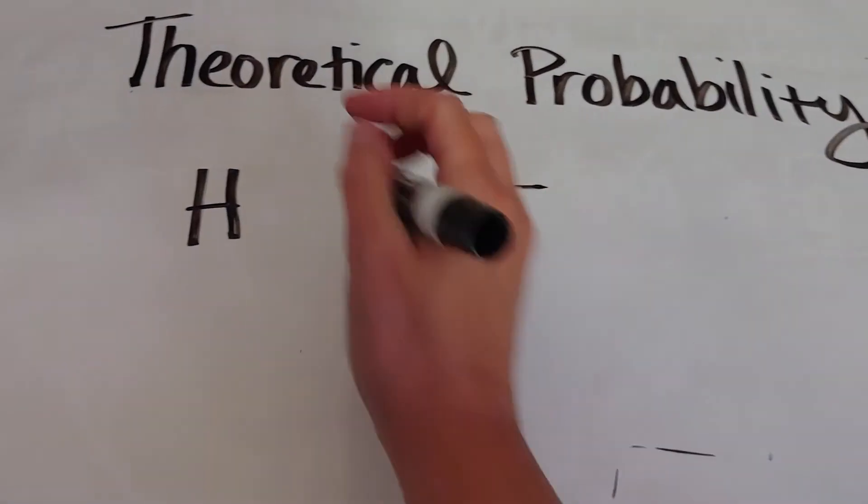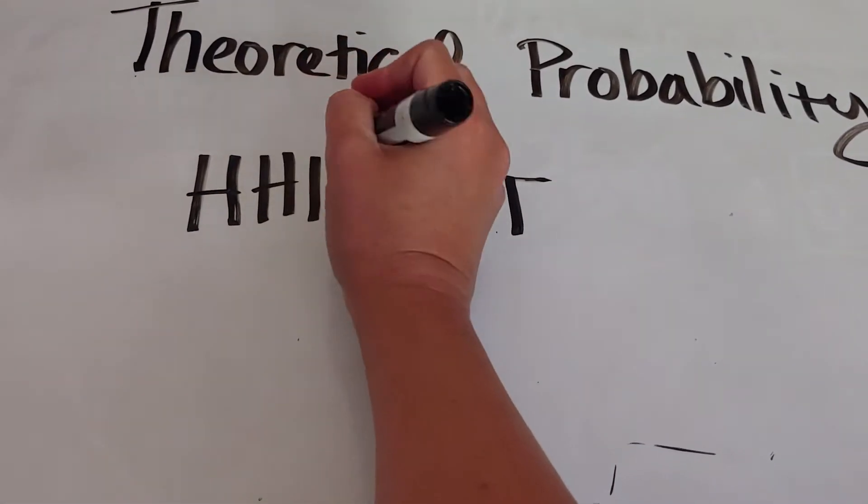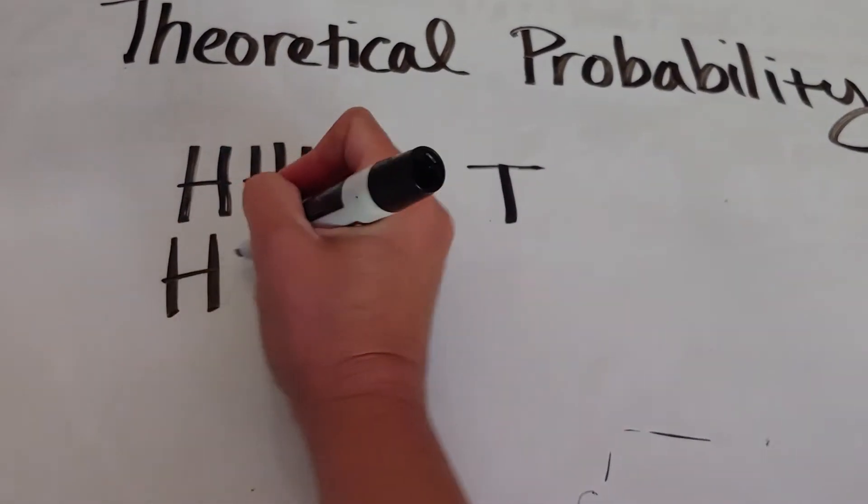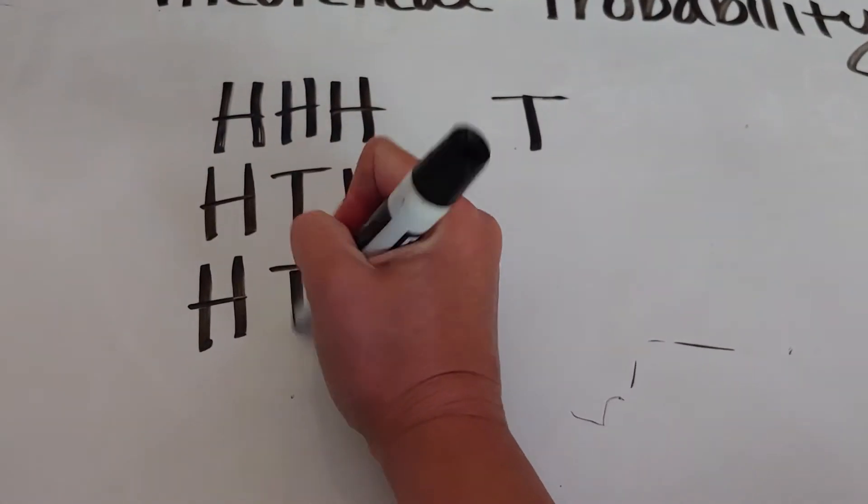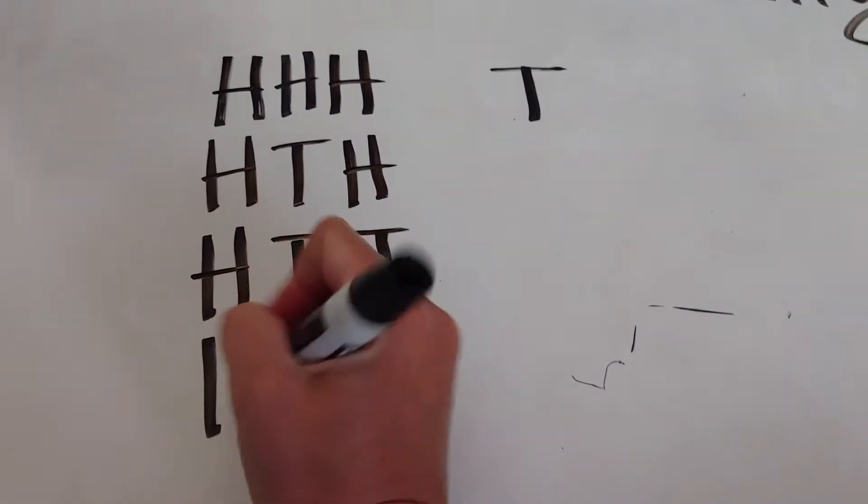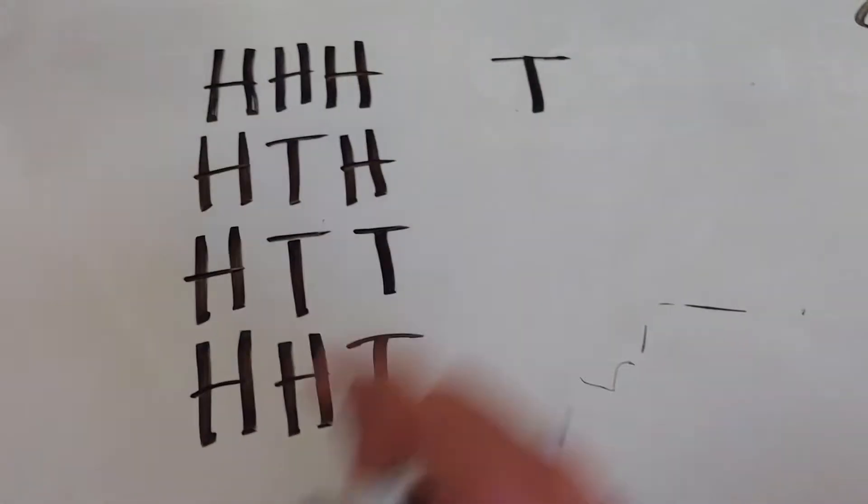So I'm going to write down all the different things that can happen. You can get three heads, heads-tails-heads, heads-tails-tails, and heads-heads-tails.